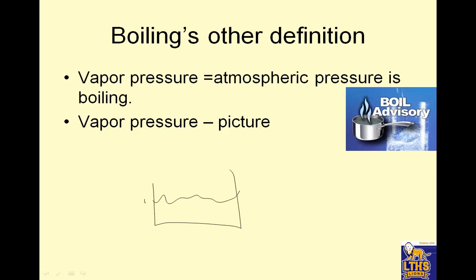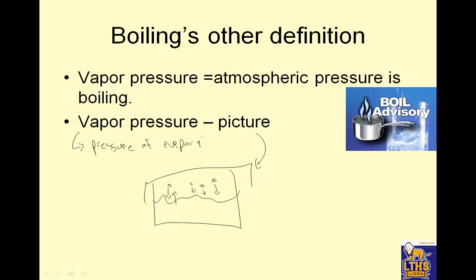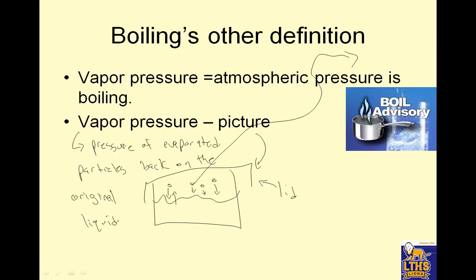So what is vapor pressure? Particles evaporate — this isn't boiling, but they evaporate — and when they evaporate, they push back down on the liquid. That's the picture of vapor pressure. Some particles evaporate and push back down on the original liquid. The wordy definition is: the pressure of evaporated particles back on the original liquid. It needs a lid — because if you don't have a lid, the particles just escape.